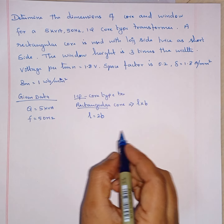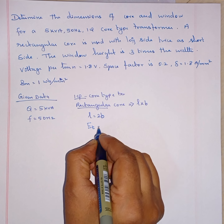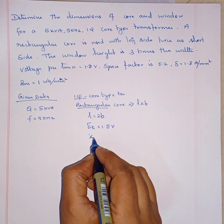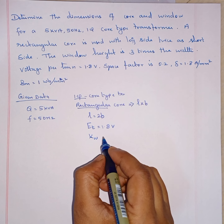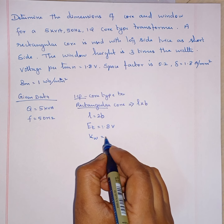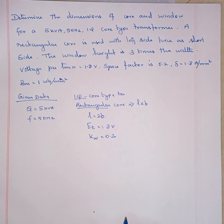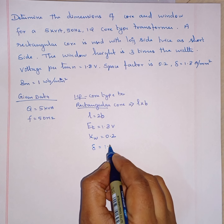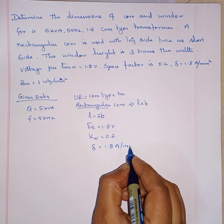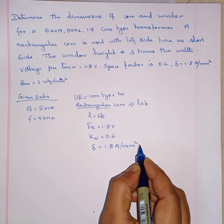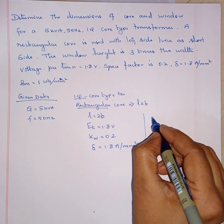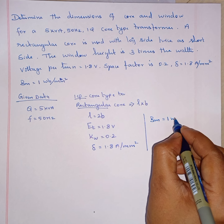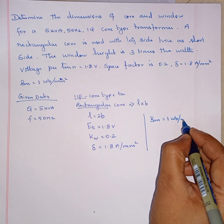Then voltage per turn ET is given as 1.8 volts. And space factor KW is 0.2. And current density delta is equal to 1.8 ampere per millimeter square. And BM is equal to 1 Weber per meter square.